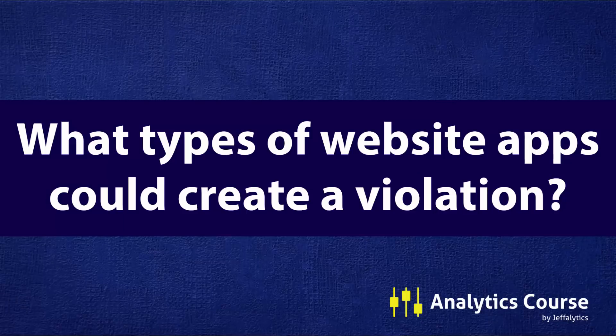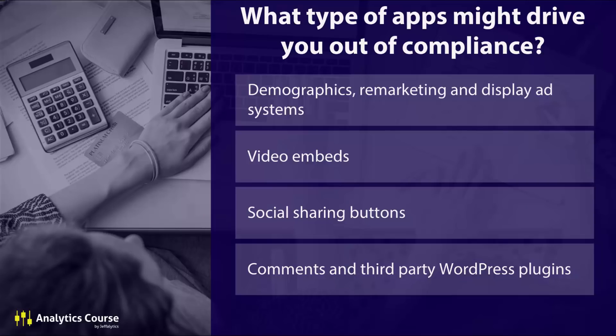What types of website apps could create a violation in and of themselves? Anything related to demographics in Google Analytics, remarketing, display ad systems, video embeds by third-party players like Vimeo and Wistia — if they're sending data to their own analytics, that qualifies as a third party. Also social sharing buttons like AddThis, and comments and third-party WordPress plugins. For example, the Disqus comment system could put you in violation.